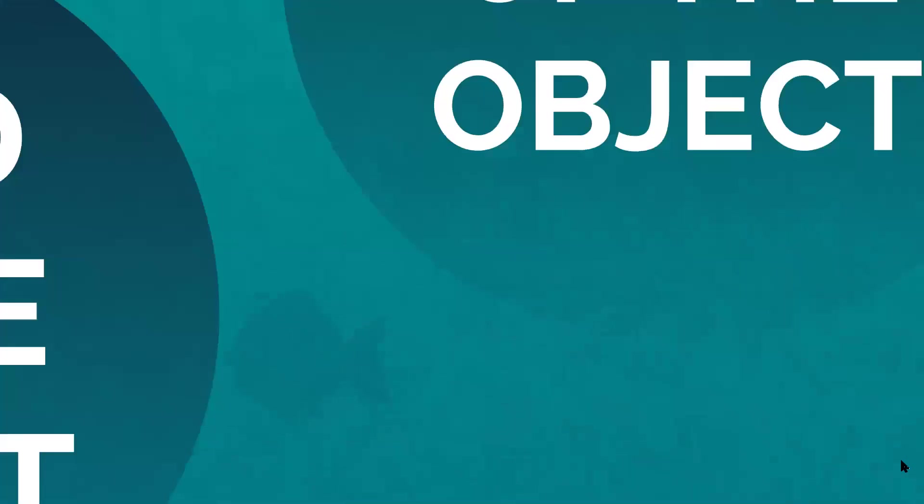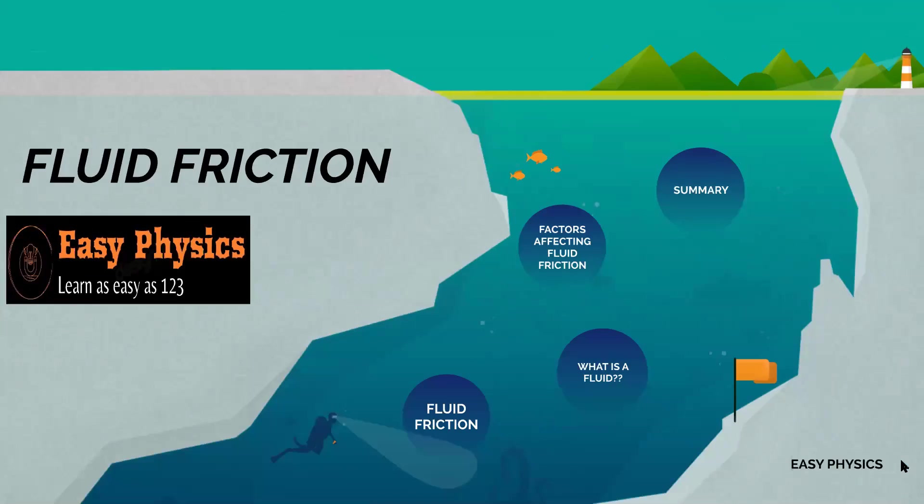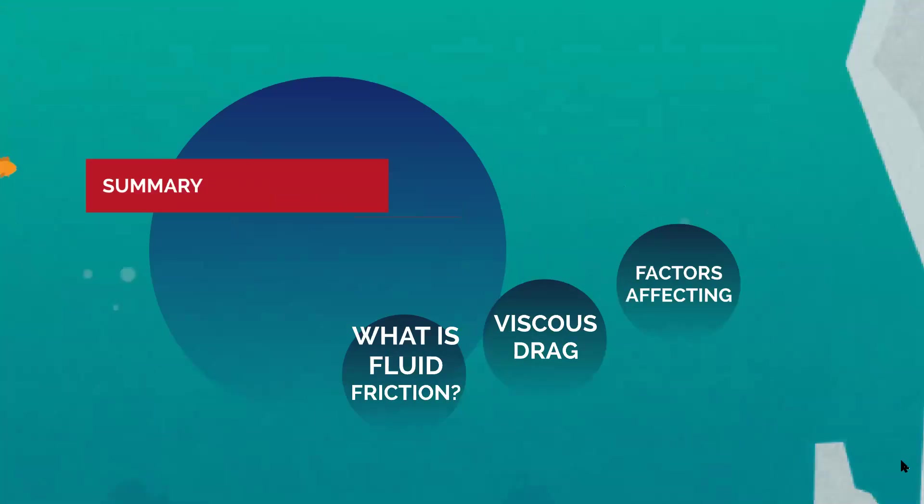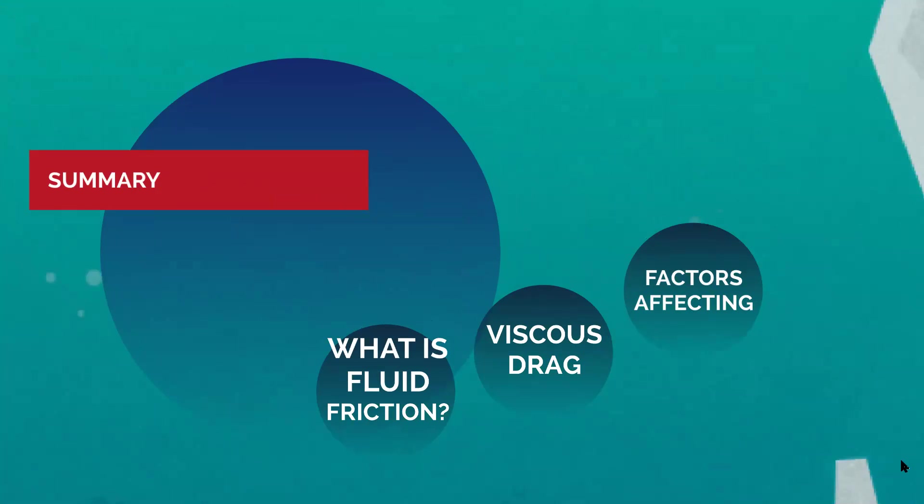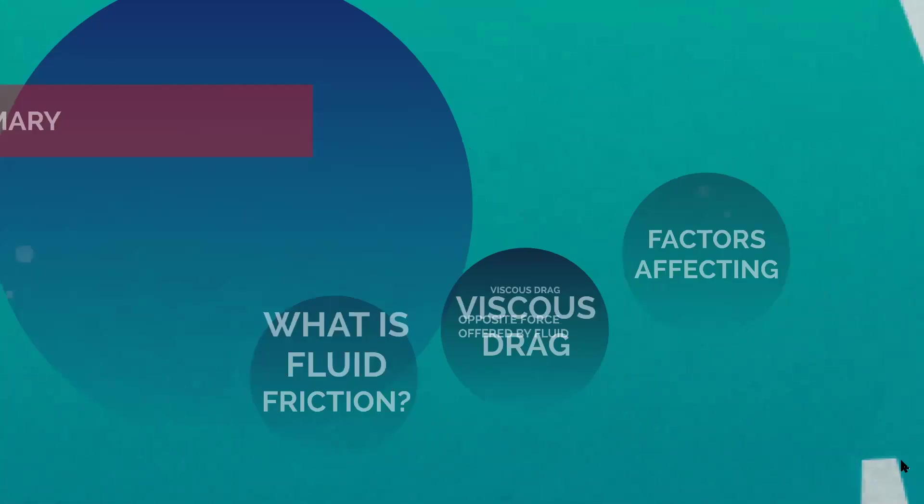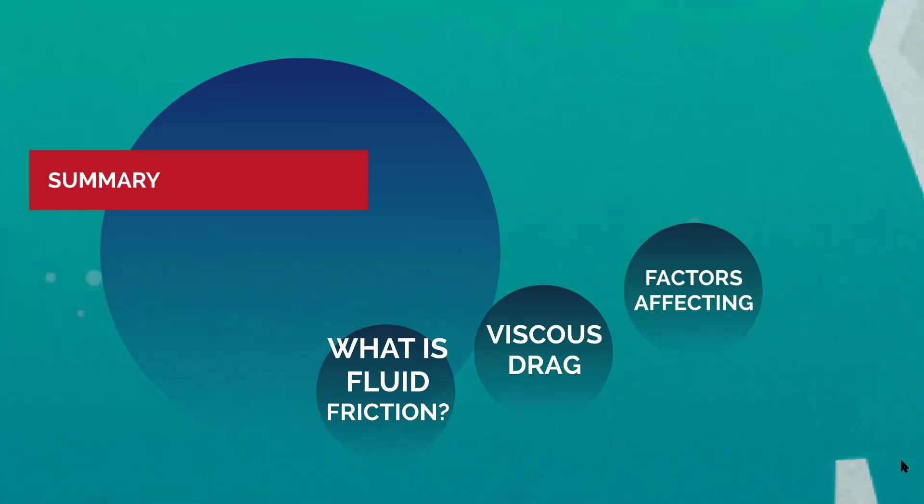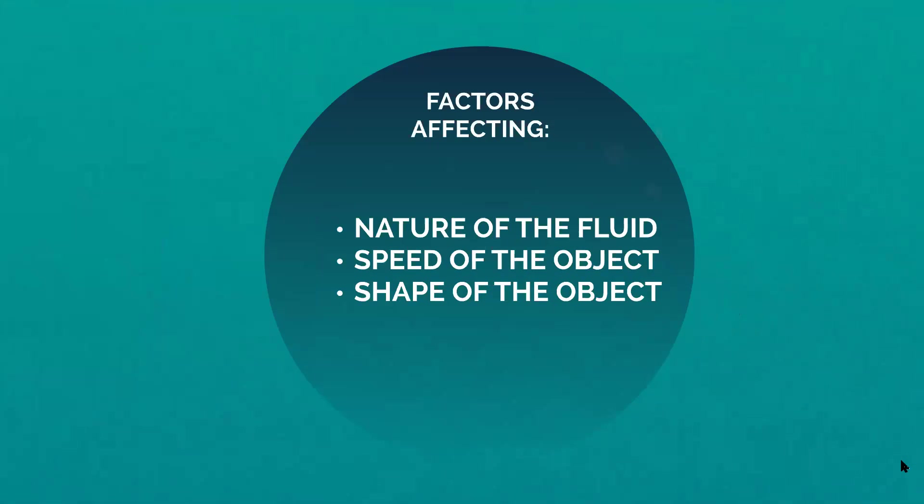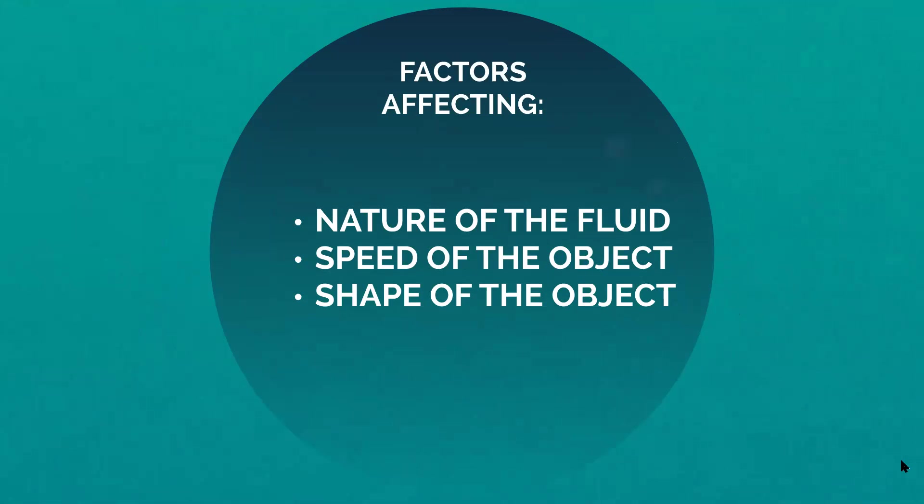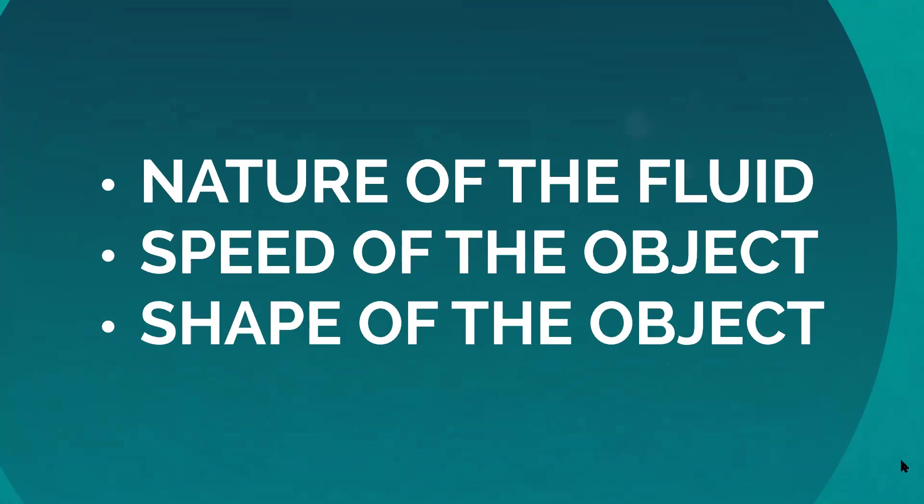Hope all the three factors are very clear to all of you, that fluid friction depends on nature of the fluid, speed of the object, and shape of the object. To conclude the fluid friction topic, let us have a quick recap of what all things we discussed today. What is fluid friction? It is nothing but the friction offered by fluids. We otherwise call it viscous drag. That is, it is obviously the frictional force or the opposite force offered by any kind of fluid. Fluid means it could be gaseous state or liquid state. The factors affecting friction are nature of the fluid, speed of the object, and shape of the object.